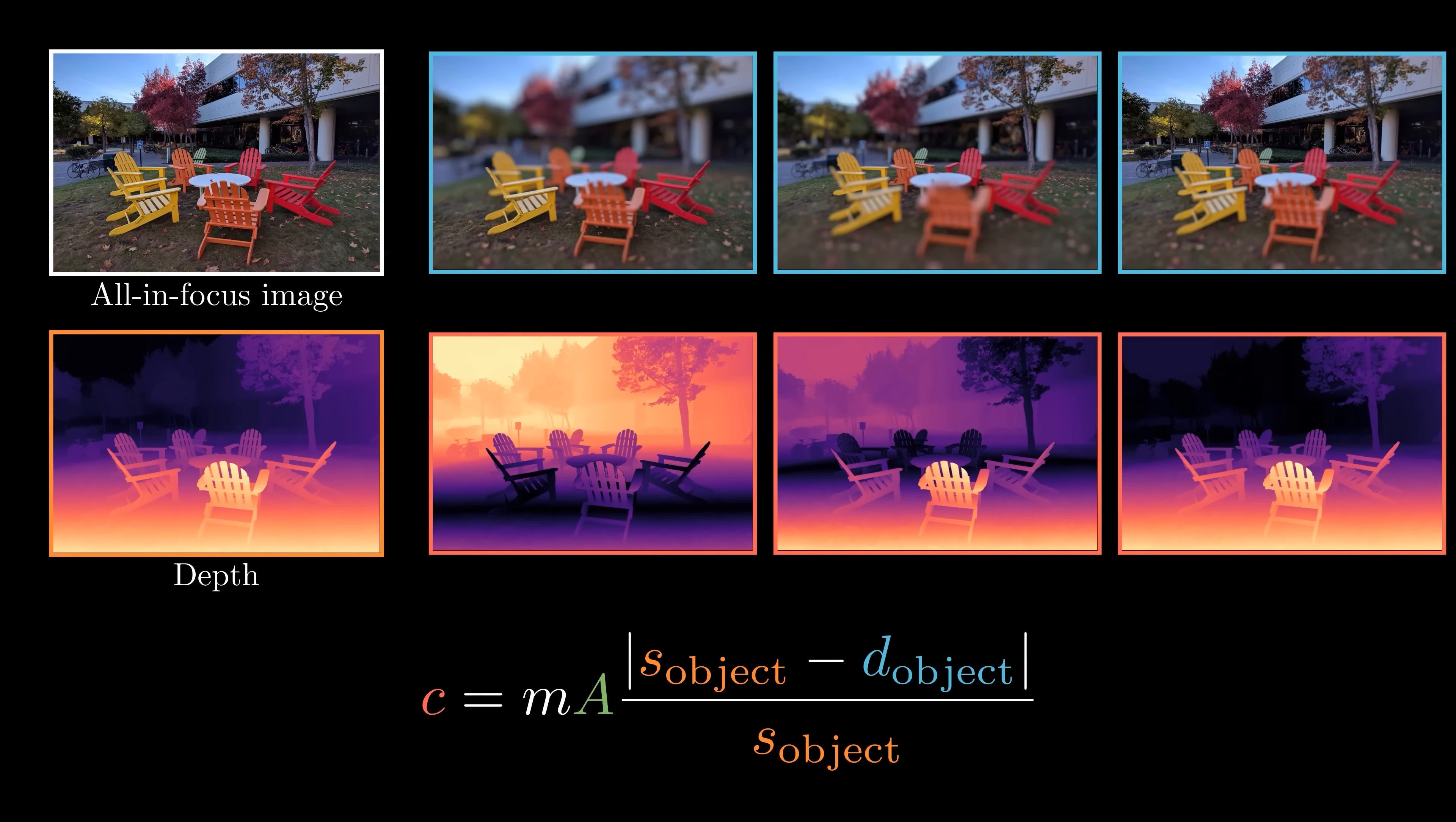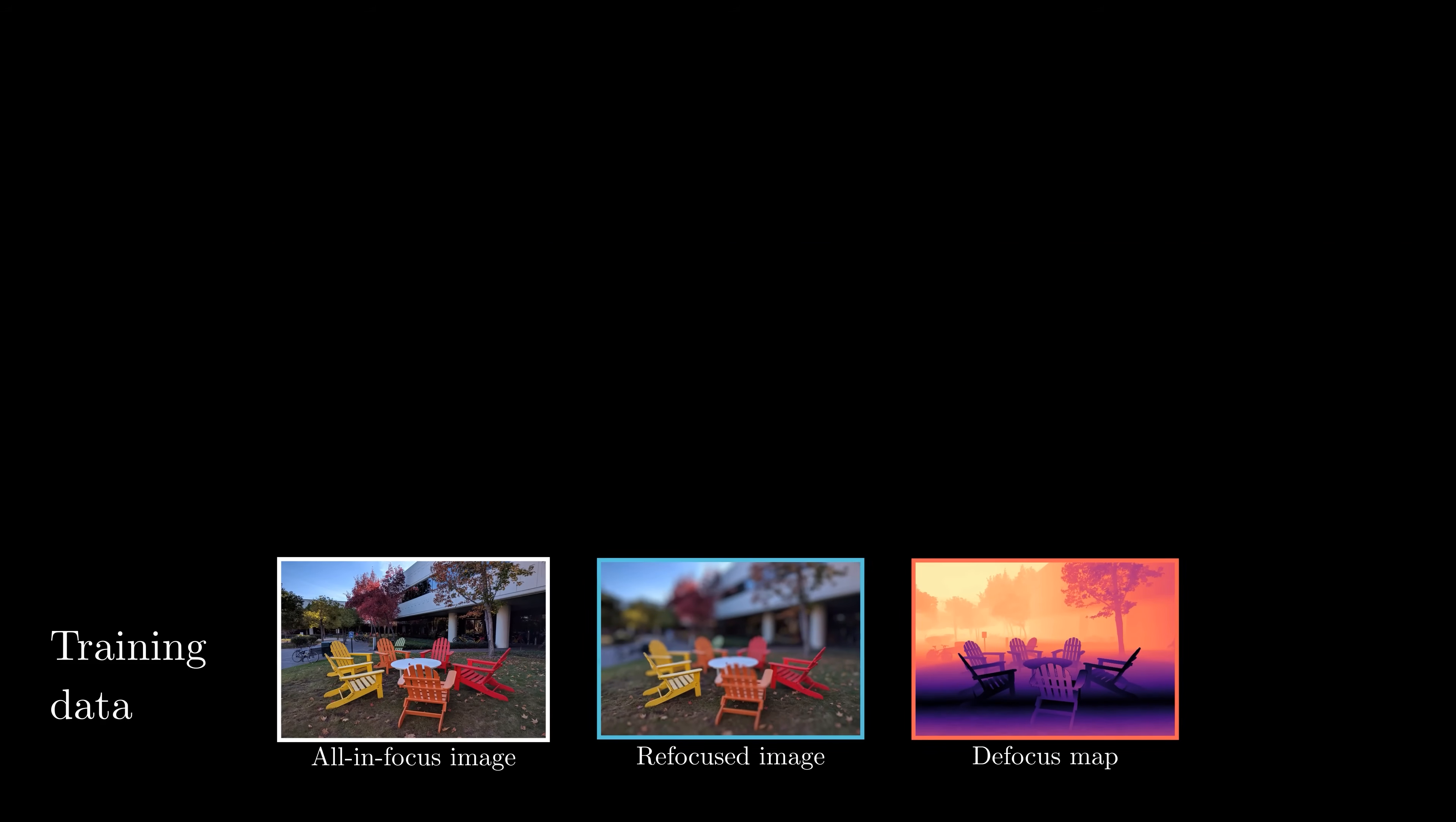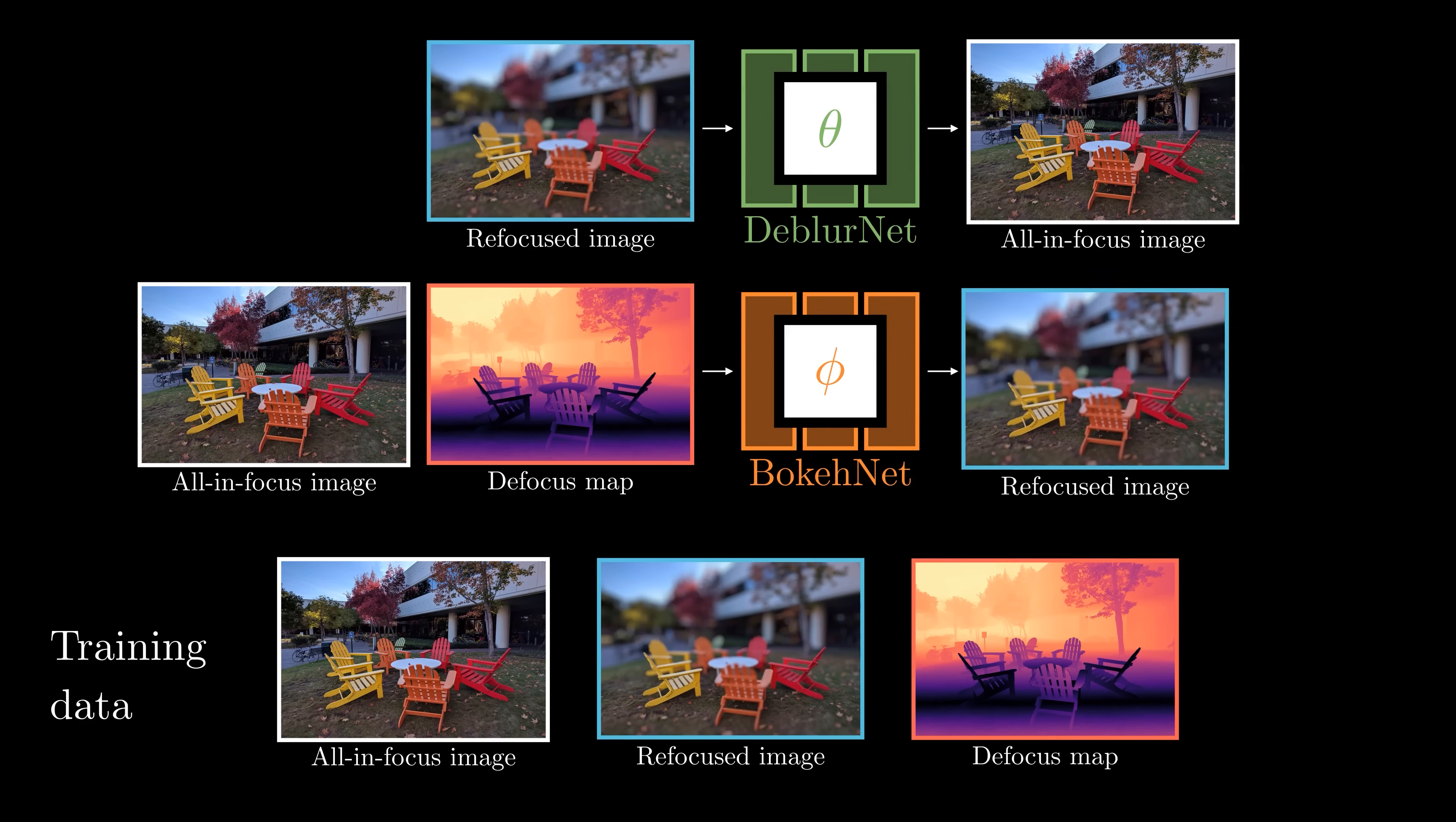We use a set of three images: an all-in-focus image, a refocus image, and its corresponding defocus map as a training triplet. We use the training data to train two models. The first model takes an image with synthesized defocus blur as input and predicts the corresponding all-in-focus image. The second model takes the all-in-focus image and the target defocus map as input to generate the image with the desired defocus blur.